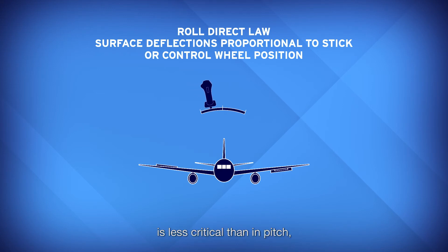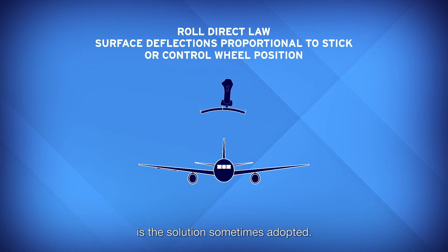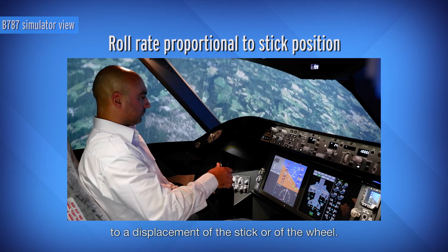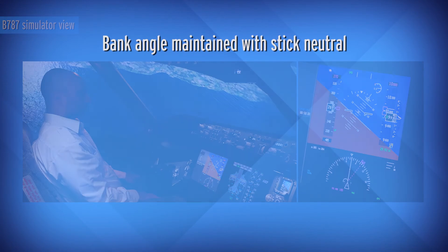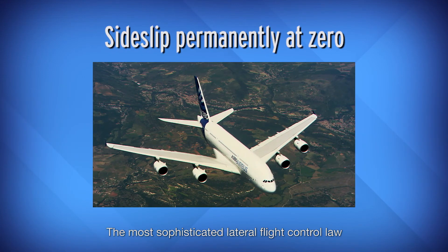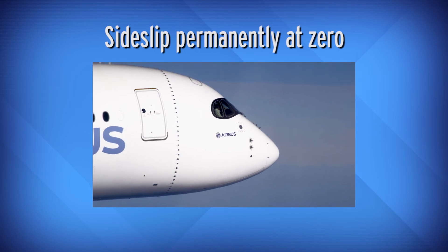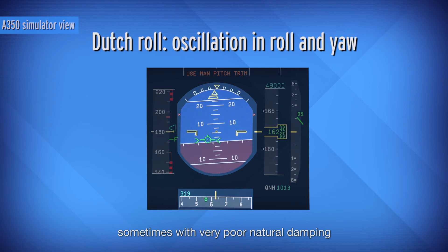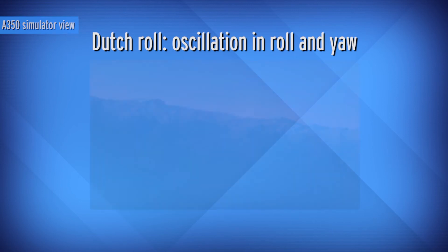Stabilizing the airplane in roll is less critical than in pitch, and a direct law — meaning surface deflections proportional to the stick or control wheel displacements — is the solution sometimes adopted. A roll rate may also be associated with a displacement of the stick or wheel. When they are in a neutral position, the bank angle is maintained if not too high. The most sophisticated lateral flight control law permanently maintains sideslip at zero, as on the A380 and A350.